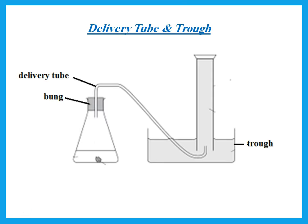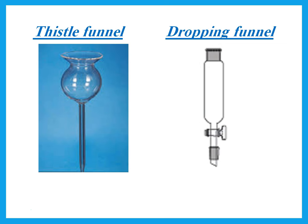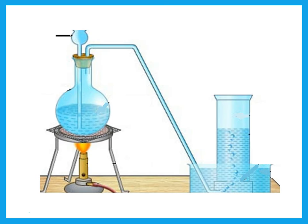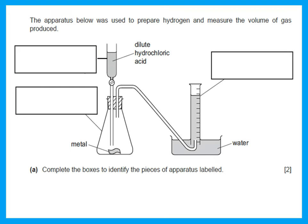This is the delivery tube. That large beaker down there is not called a beaker — it's called the trough. The bung is what we use to close the mouth of the flask. These are funnels placed at the top of the flask. If it has no tap, it's called a thistle funnel; if it has a tap, it is a dropping funnel. The full setup names are: thistle funnel, flask, wire gauze, Bunsen burner, tripod stand, delivery tube, gas jar, and trough. A dropping funnel has a tap but no graduations. The other apparatus shown are a conical flask and a measuring cylinder.